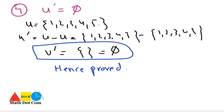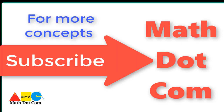All the properties of the four set operations — union, intersection, difference, and complement — have been proved. Hope this lecture has helped you. For any queries, please comment in the comment section. Thank you.